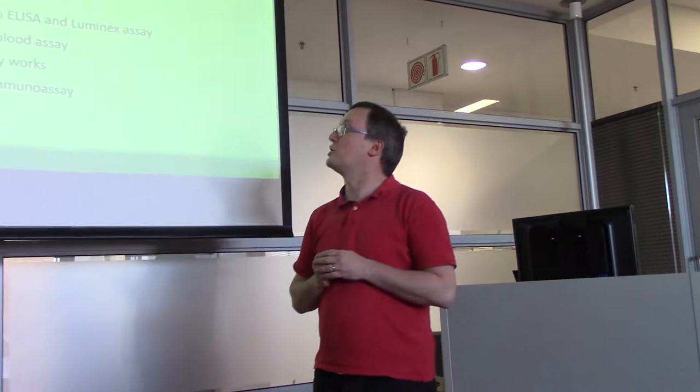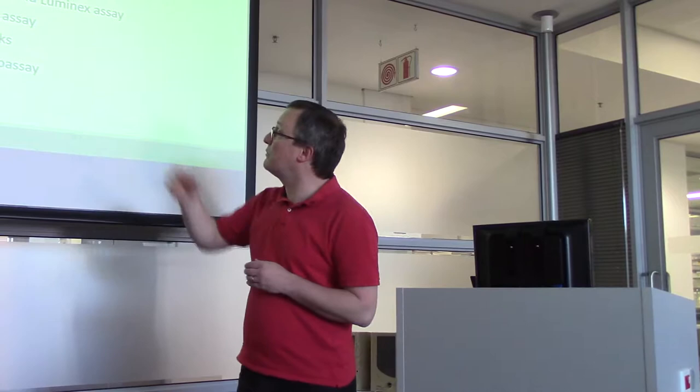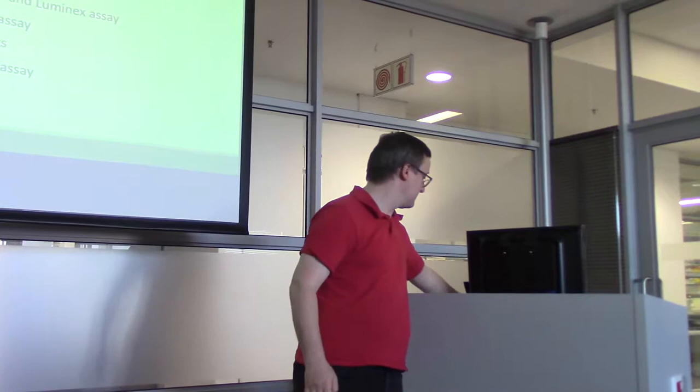We're going to start by defining what these things are, then move to talk about how antibodies bind specific antigens. We're going to understand some different labeling strategies used for making detections, and we'll describe the differences between ELISA and Luminex assays, a rather high-tech way of performing multiplex immunoassays. We'll also talk about whole blood assays and why they're important, lateral flow assays, and finally some of the different sample types and how they interact with these immunoassays.